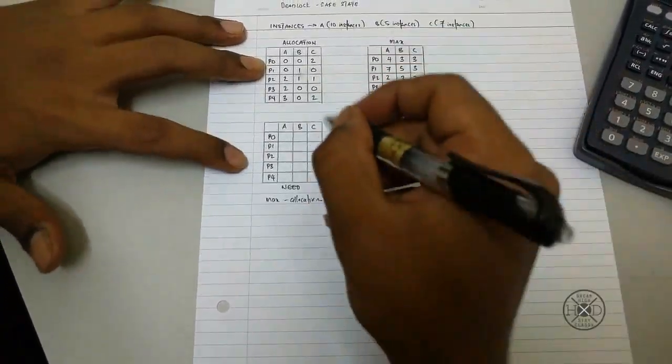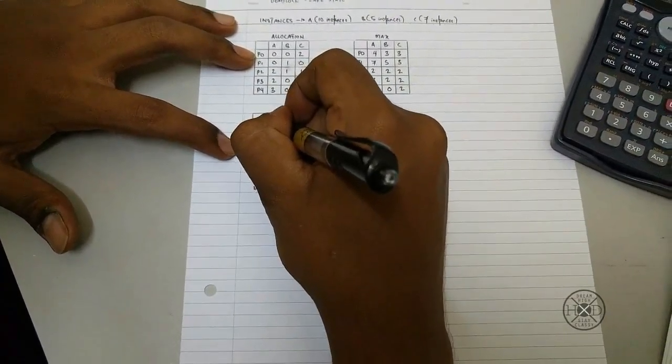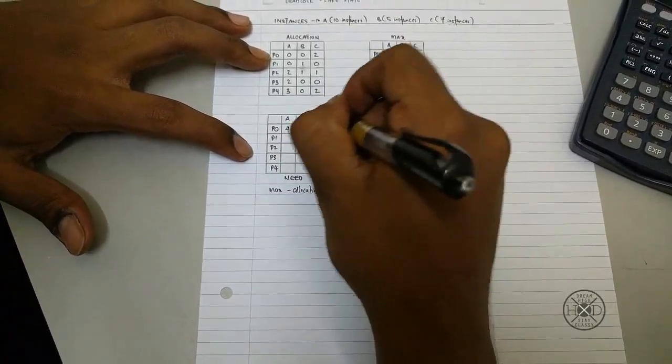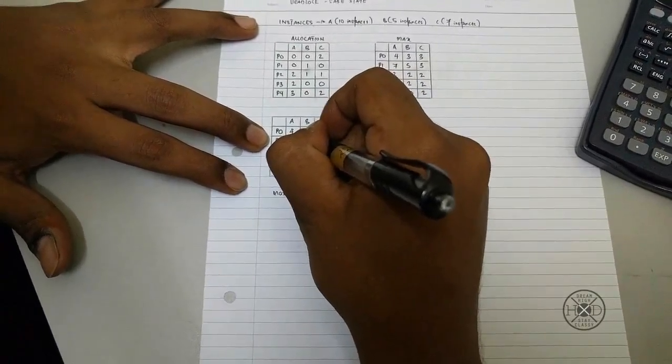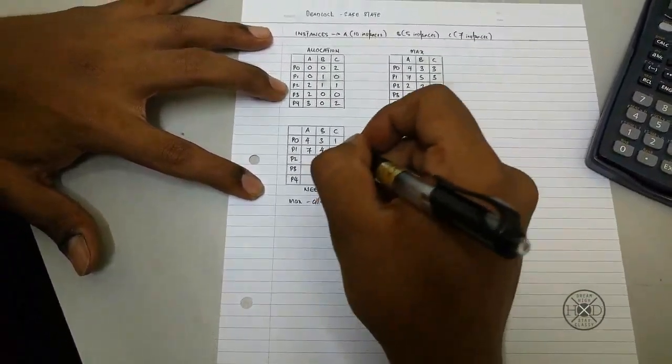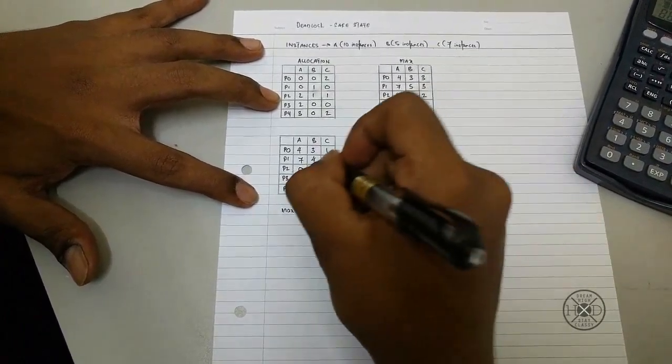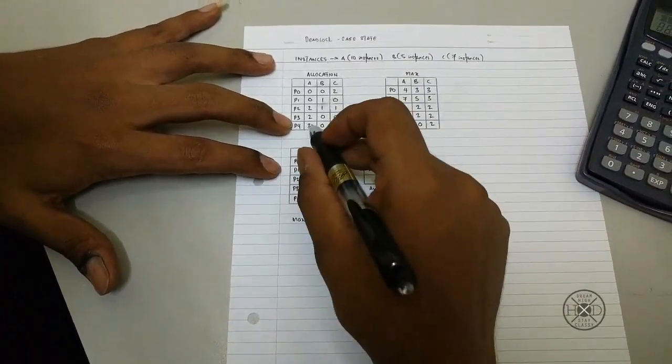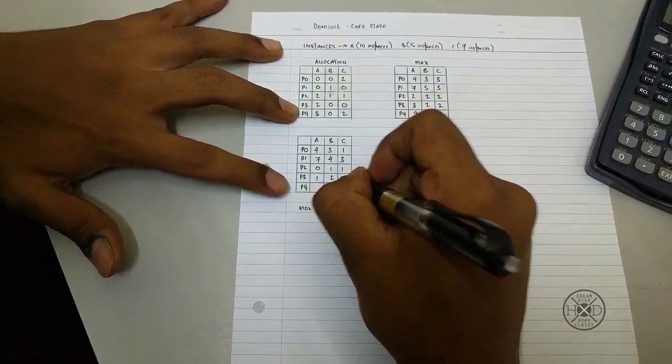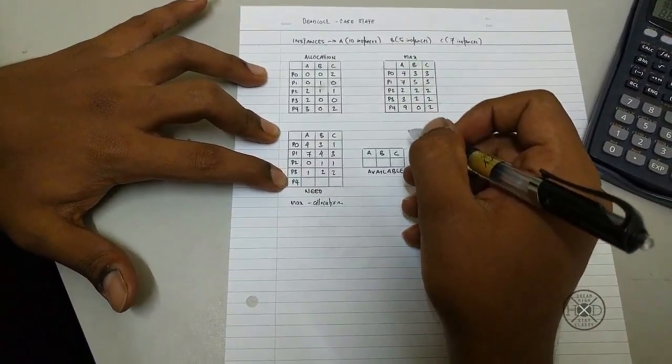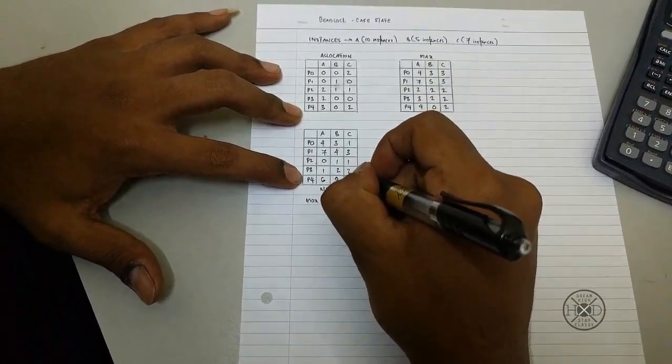So you will get a value of 4, 3, 1. For process 1 you will get 7, 4, 3. For process 2 you will get 0, 1, 1. For process 3 you will get 1, 2, 2. For process 4 you will get 6, 0, 0.